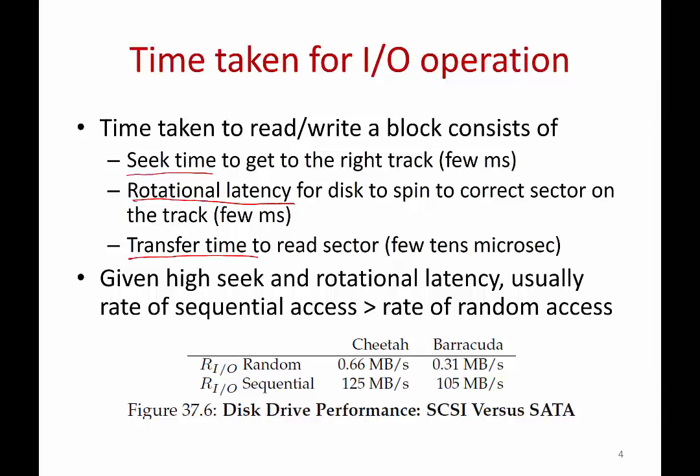If you compare the performance of two access patterns: with random IO, you can read less than one megabyte per second. On the other hand, with sequential IO — seek to a sector, rotate to it, and read a large number of contiguous sectors — you can get a much higher bandwidth from the disk. So in general, all disks try to maximize sequential access, and operating systems also perform various optimizations to maximize sequential access.